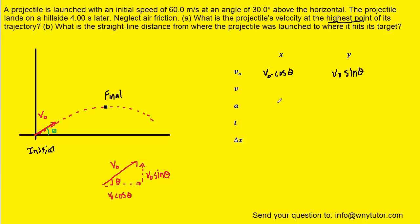In the x direction, the acceleration is zero. In the y direction, the acceleration is negative 9.8. Because the acceleration is zero in the x direction, the final velocity in the x direction equals the initial velocity, so we mark it as v₀cosθ. It's important to understand that at the highest point of a projectile's trajectory, the final velocity in the y direction is zero. That's very important: vy = 0 at the highest point always. We can fill in zero into the table.